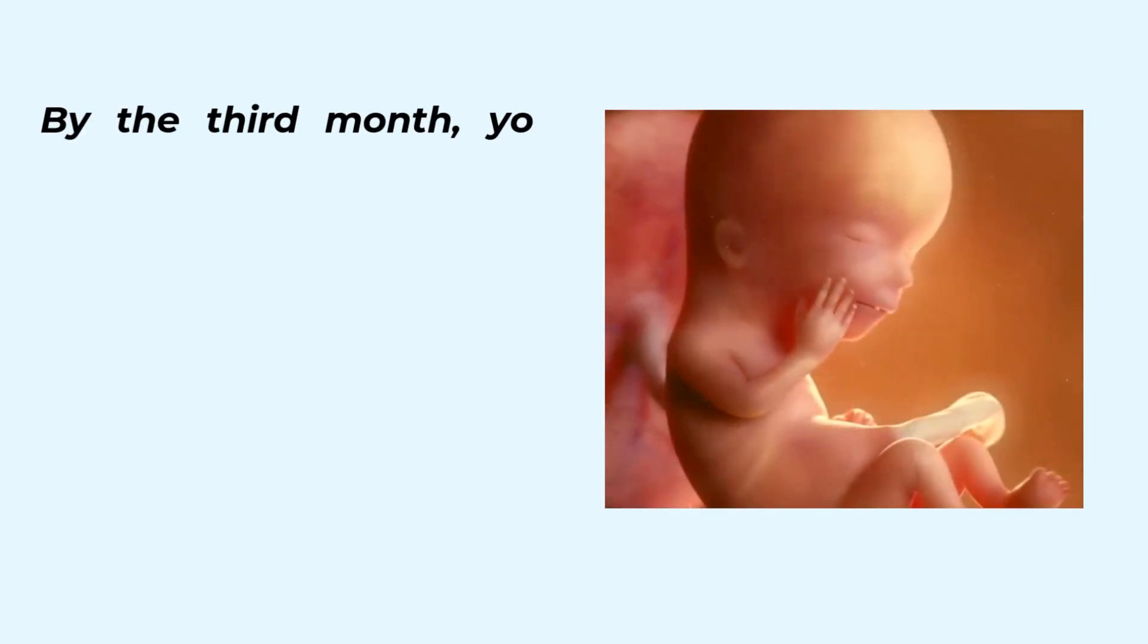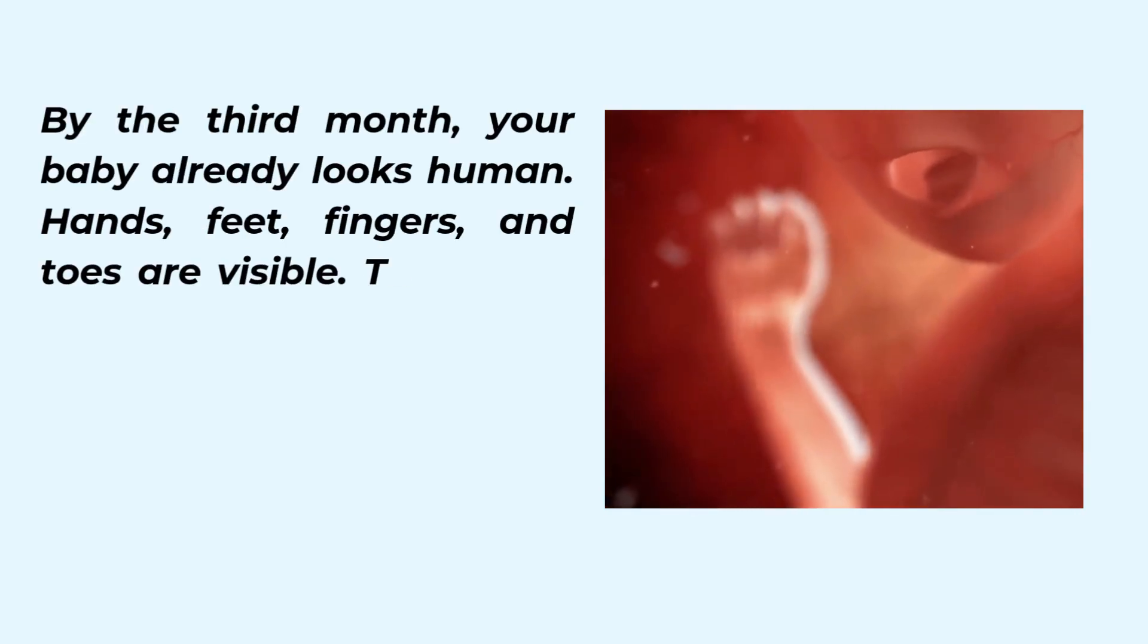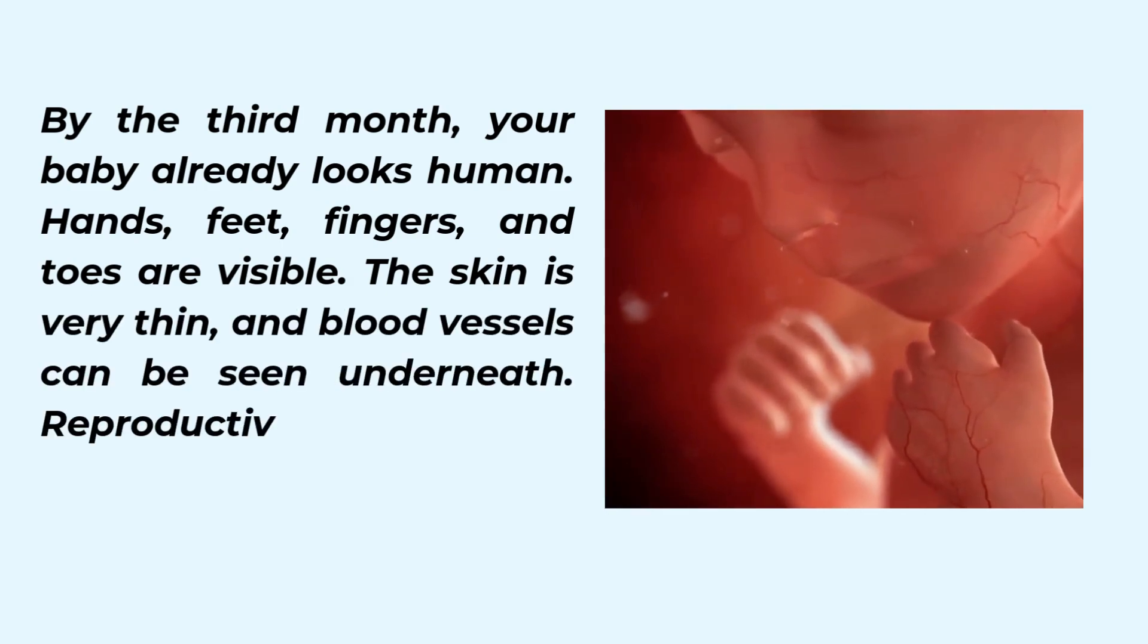By the third month, your baby already looks human. Hands, feet, fingers, and toes are visible. The skin is very thin and blood vessels can be seen underneath.